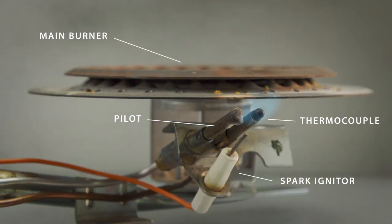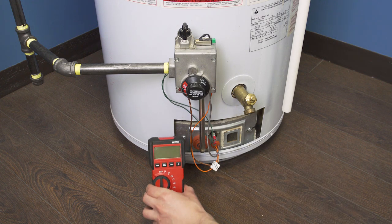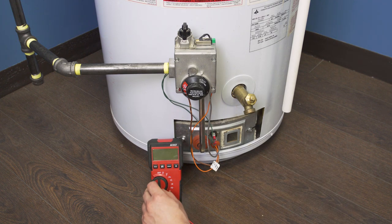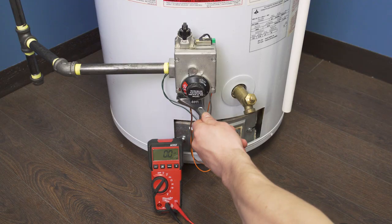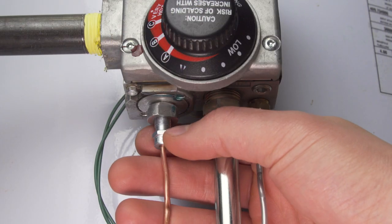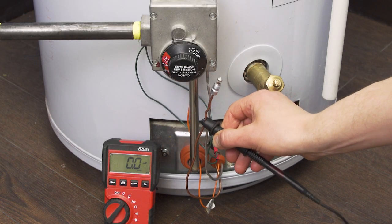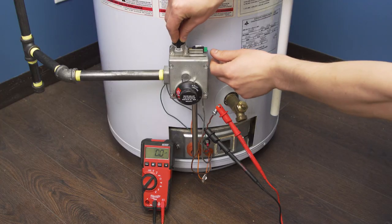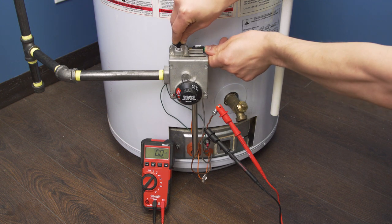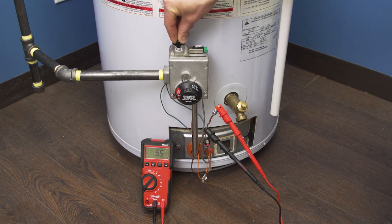The thermocouple voltage can be safely tested while lighting the pilot. First remove the bottom cover. Set the multimeter to the volts DC option. Use the adjustable wrench to unscrew the thermocouple from the control valve. Now connect the probes to the copper and to the end of the thermocouple. Light the pilot and hold down the button. The voltage should start to rise over the next few minutes as the thermocouple heats up.